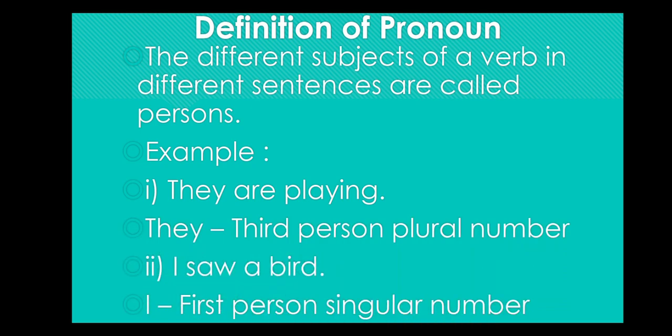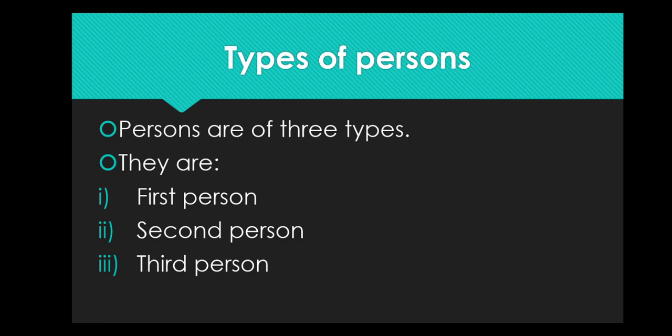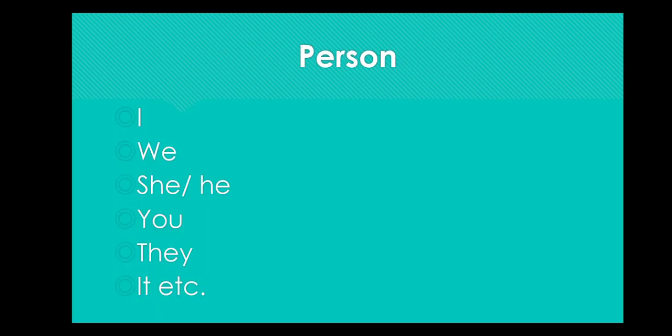Now, dear students, you also learned that there are three types of persons. What are they? Yes — they are first person, second person, and third person. You know that I, we, he, she, you, they, etc. are persons.